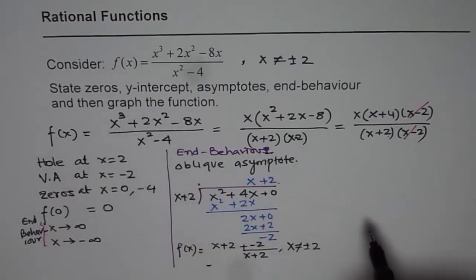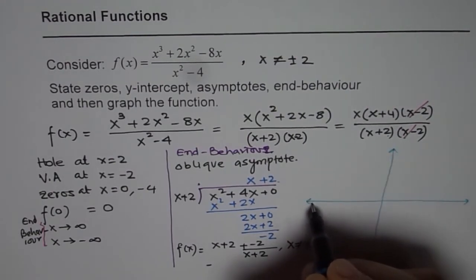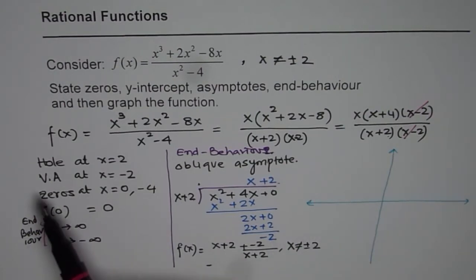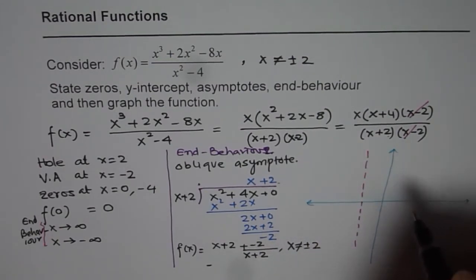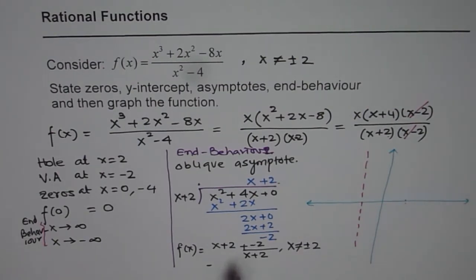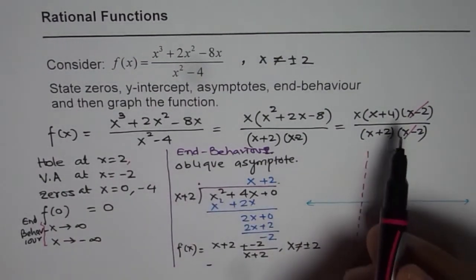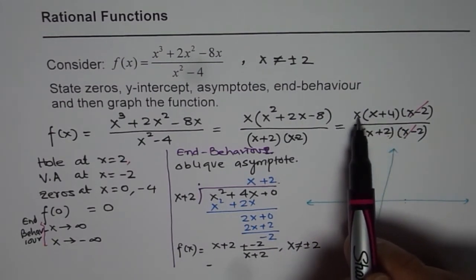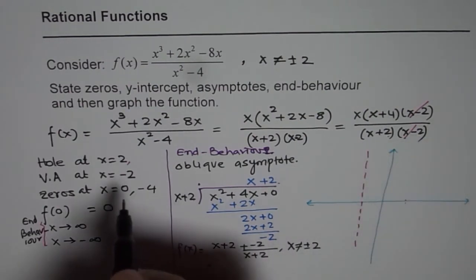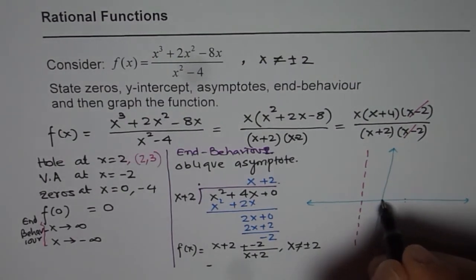Now let's graph the function. We have a vertical asymptote at x = −2, so let's draw that. We also have a hole — we need to find its y-value. Substituting x = 2 into the simplified function: (2 + 4) × 2 / (2² − something) — evaluating gives (6 × 2) / 4 = 12/4 = 3. So the hole is at (2, 3). The y-intercept is right at the origin.